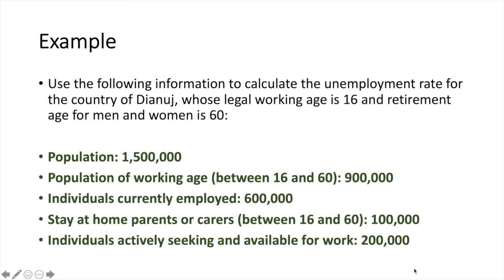Let's look at an example. Use the following information to calculate the unemployment rate for the country of Dianuj College, whose legal working age is 16 and retirement age for men and women is 60. The population is 1.5 million. The population of working age between 16 and 60 is 900,000. There are currently 600,000 individuals employed. Stay-at-home parents or carers between the age of 16 and 60 are about 100,000, and individuals actively seeking and available for work are equal to about 200,000.